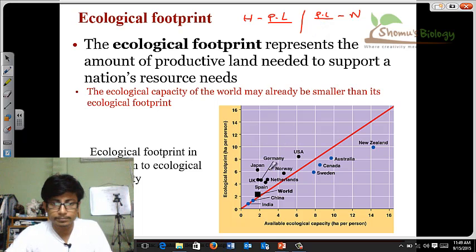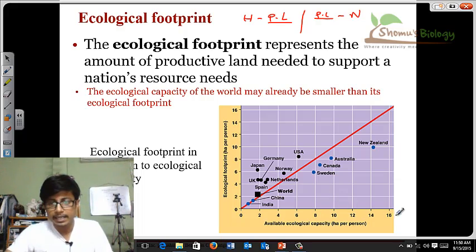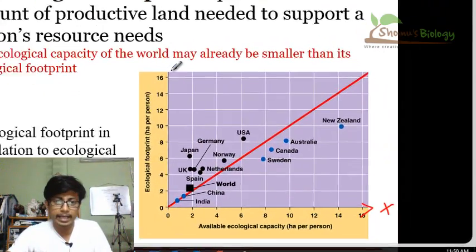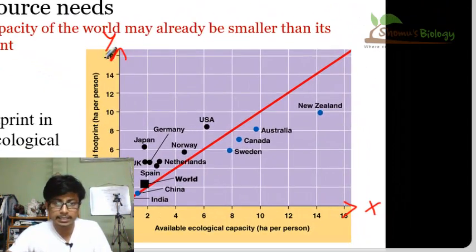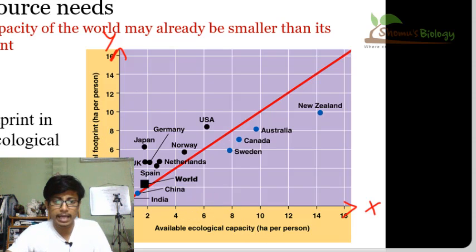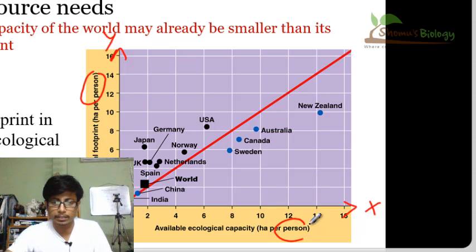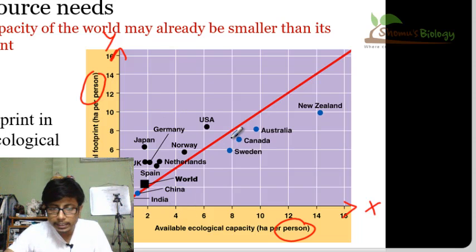So if you look at this diagram, on the x-axis there is available ecological capacity, and on the y-axis we have the ecological footprint — looking at it per individual person. There are different countries placed in this graph.